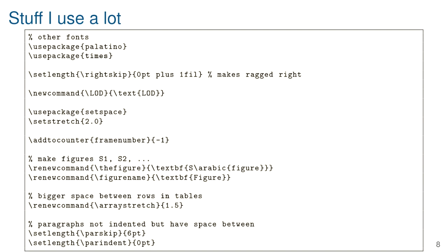The default font in LaTeX is pretty terrible, so I often use add-on packages — similar to library() in R — to change the font to Palatino or Times. I also use a bit of code I don't fully understand to make the right margin ragged rather than flush, and you can define new commands — essentially macros or shortcuts. For example, I can define a shortcut so that where I might write text 'lod' in math equations I can just write backslash lod.